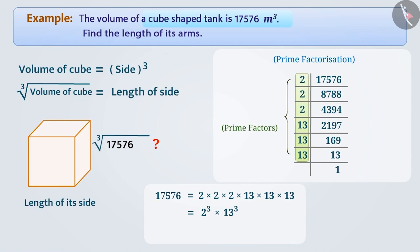Using the law of exponents, a to the power m times b to the power m equals a times b whole to the power m, we can write it as 2 times 13 whole cube, that is 26 cube. In this way, we can say that 26 is the cube root of 17,576, and this is also the length of the arm of the tank.